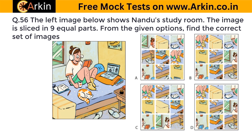The left image shows a study room sliced into nine equal parts — find the correct set of images from the options. Comparing options: one option has a sheet with no pattern whereas the original has a pattern, so that is not correct. Option C is missing a slipper. The book is brown in the original but blue in another option, so that is not correct. One option is missing a pen, so D is also not correct. Between the remaining two, the headphone in option A is brown whereas in the original it is white, so A is wrong and the correct answer is B.